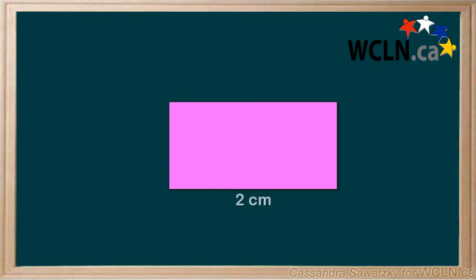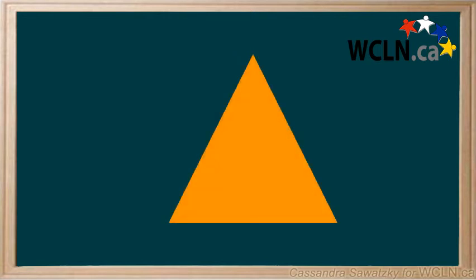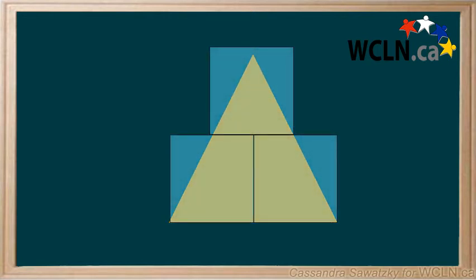For a shape that is 2 cm long and 1 cm wide, it's easy to imagine two of our squares fit. So our shape is 2 cm squared. But with more complicated shapes, like this triangle, it gets a little more difficult. So we have some equations that we can use to help us determine the area of these shapes.